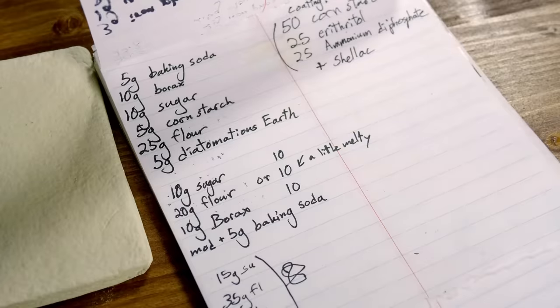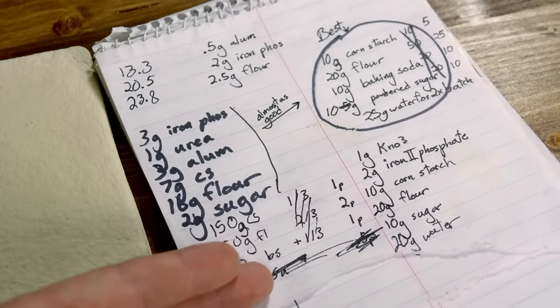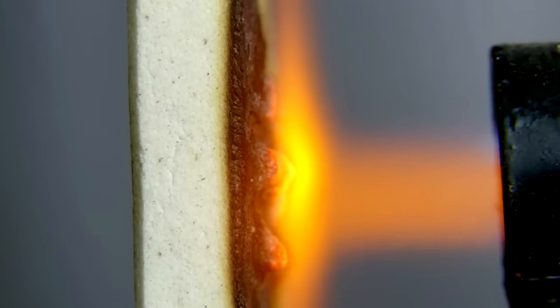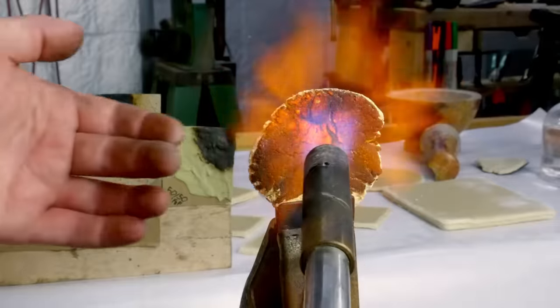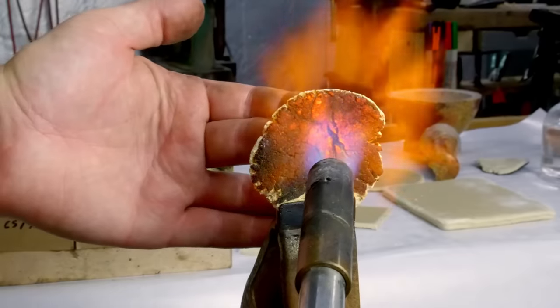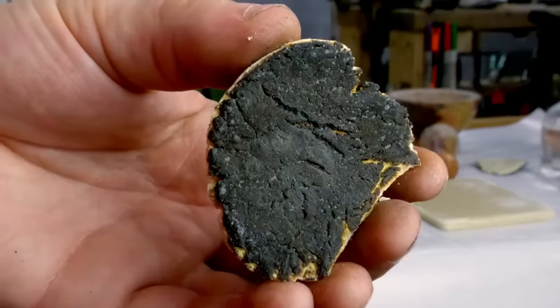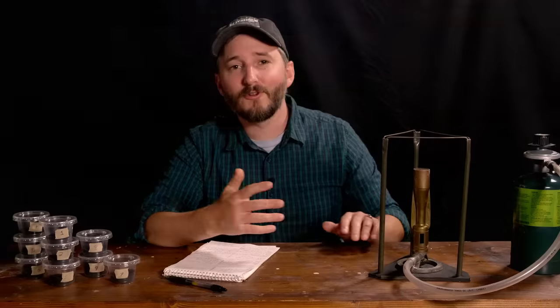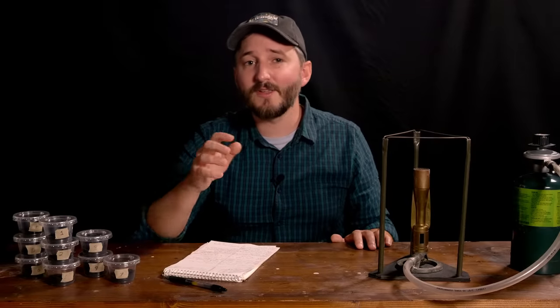If you change two things at once you would never know which change is responsible for your result. In fact, one of the two changes might be helpful to your experiment while the other is so destructive that it makes the entire test look like a failure. You don't learn anything by doing this and you actually concealed information that might have helped you.